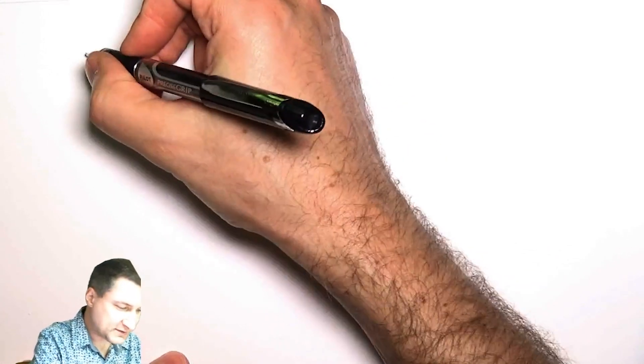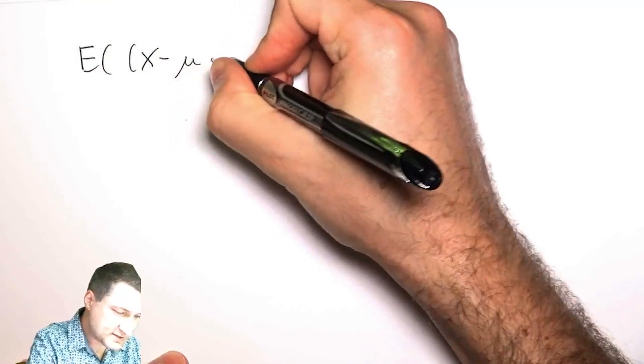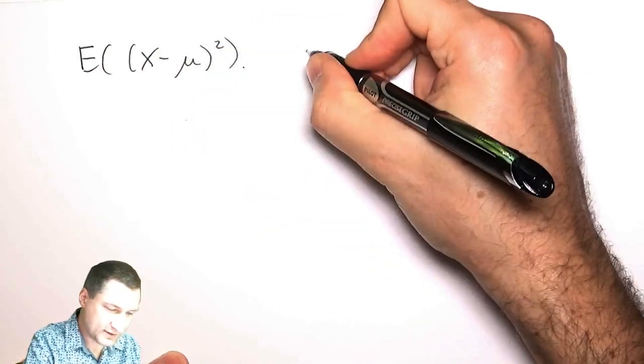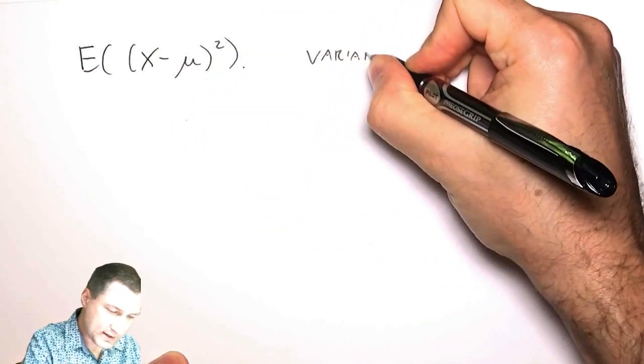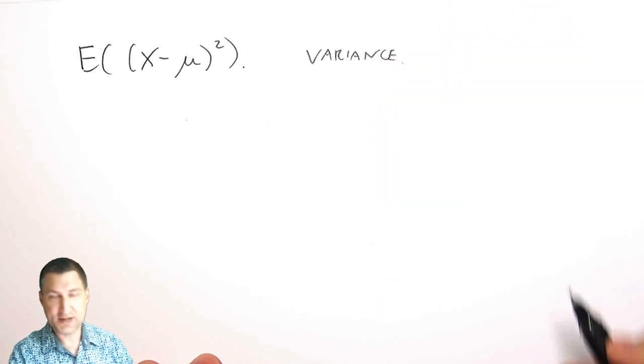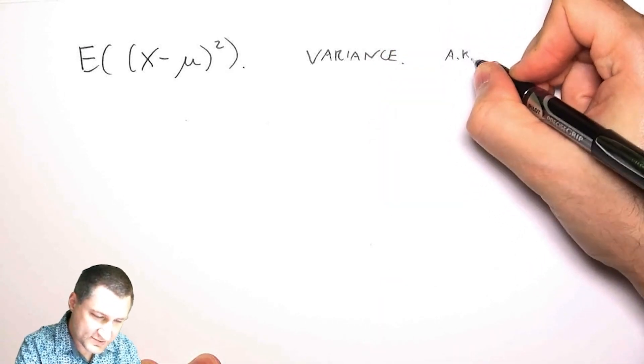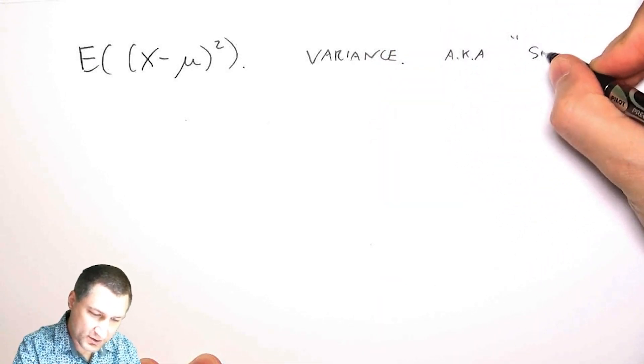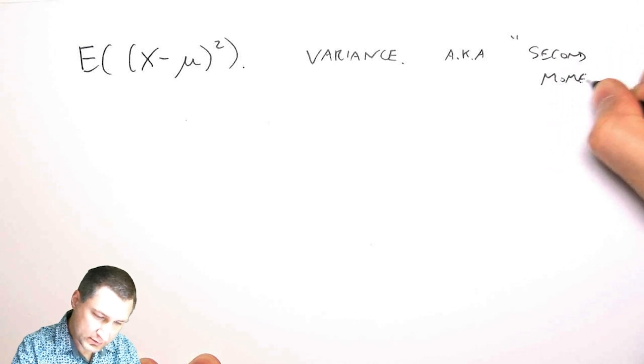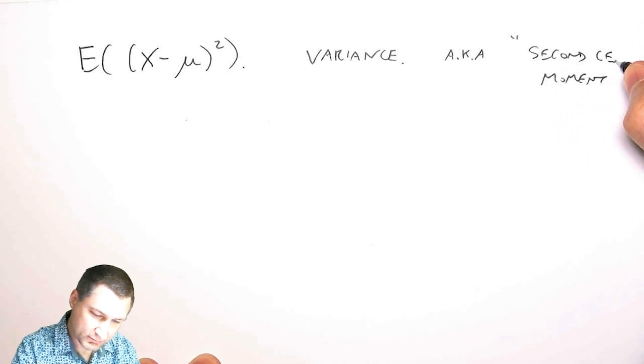Now, we defined the variance as basically this expected value of X minus its mean squared. This was called the variance. I don't think I said so at the time, but this is also known as the second moment, or actually the second central moment.